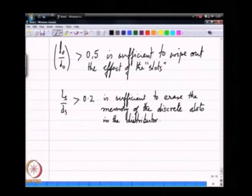Just the fact that I had these discrete slots bringing in the fuel, I do not want those discrete slots to still have an effect as the fluid goes through the nozzle and comes out in the form of a spray. Essentially this Ls over Ds being greater than about 0.2 is sufficient to ensure that that effect is wiped out.